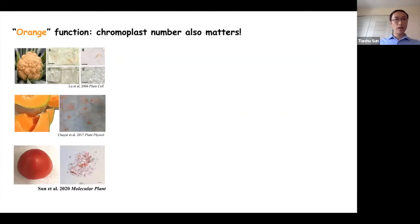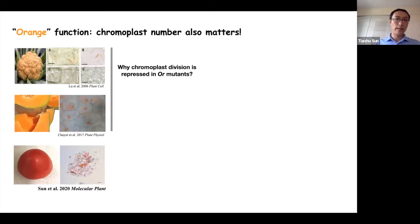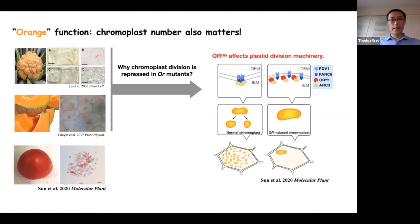For the orange function, both in cauliflower and in melon, OR can induce chromoplast formation and carotenoid accumulation. However, we find that the chromoplast number is only one or two large chromoplasts in each cell, compared to many chromoplasts in tomato. So why did OR induce chromoplast formation but also repress chromoplast division? Until recently, we got the answer: the mutant version of OR, OR-heat, can bind FtsZ3, which is an important factor for chloroplast division. This interaction affected the binding between FtsZ3 and PARC6, which finally affected chromoplast division.